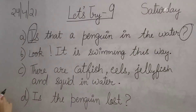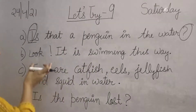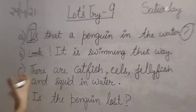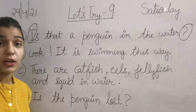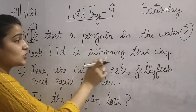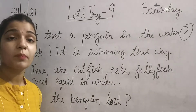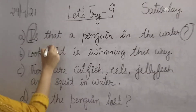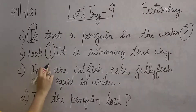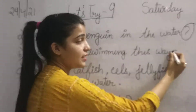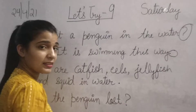The next sentence is: 'Look! It is swimming this way.' 'Look!' means someone is very excited. So this is an exclamation mark — this is also punctuation. And at the end there is a full stop. So we will circle this.